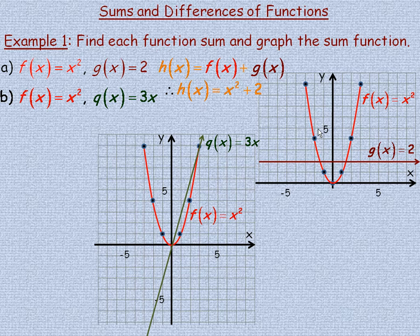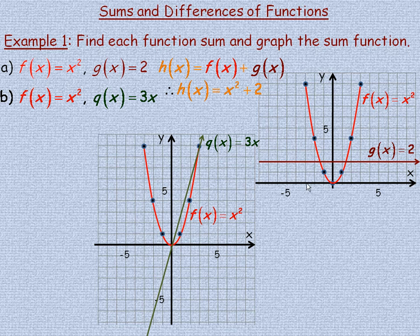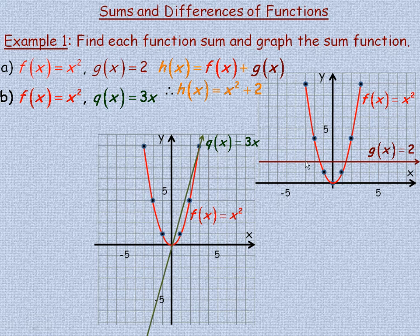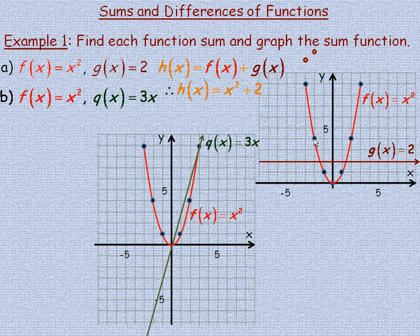What you do graphically to add these functions is add the corresponding y coordinates. For each x value, I start at negative 3. At negative 3, the y coordinates of the two functions are 2 and 9, so adding them gives 11, meaning the point negative 3, 11 is on h of x. At negative 2, the y coordinates are 2 and 4, which add to 6, so the point negative 2, 6 is on h of x.